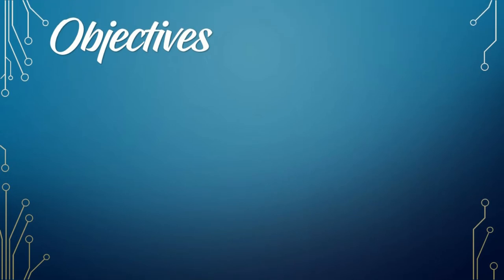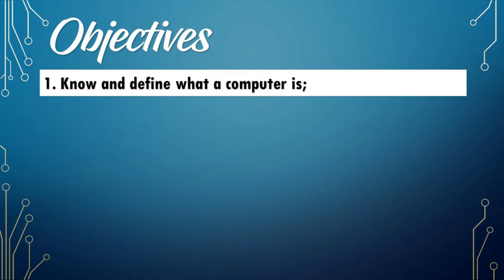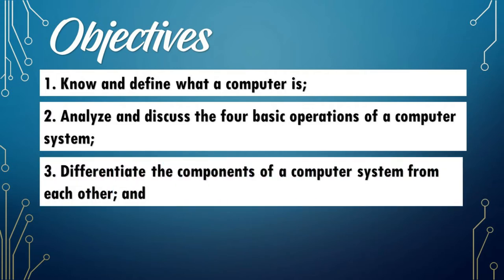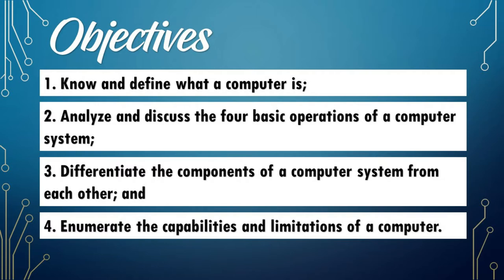Before we dive into our discussion, here are the objectives of the lesson. Number 1: Know and define what a computer is. Number 2: Analyze and discuss the 4 basic operations of a computer system. Number 3: Differentiate the components of a computer system from each other. And lastly, Number 4: Enumerate the capabilities and limitations of a computer.